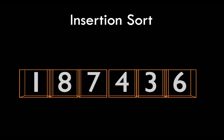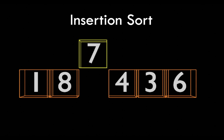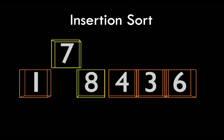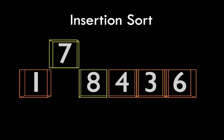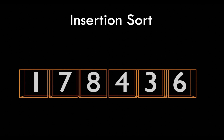Then we look at the third element, which is seven. That's compared to eight, and seven is less than eight, so we make a swap there. Seven is then compared to one, and because seven is greater than one, we know it should be on the right-hand side. The key to this algorithm is asking: is seven greater than one and less than eight? If it is, it goes in between those two.